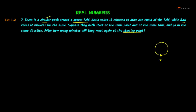We assume this is the starting point. Sonia and Ravi both start here and move in one direction. Sonia completes one round of the field in 18 minutes, and Ravi completes one round in 12 minutes.